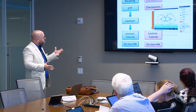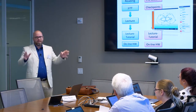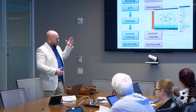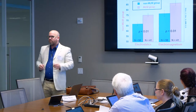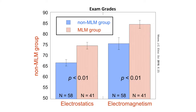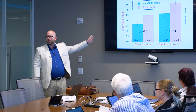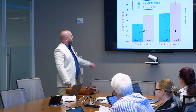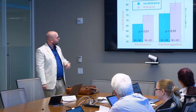We kept everything roughly the same. There's a whole paper describing the threats to validity, and there are some. Looking at cognitive achievement — exam grades across four semesters — we have what we call the non-MLM group (multimedia learning modules) and the multimedia learning modules group. We saw a statistically relevant increase in student grades in the groups doing the Flip It Physics modules.